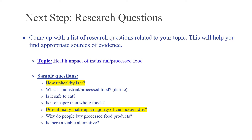Coming up with research questions: let's say my narrowed topic is the health impact of industrial or processed food. The questions become things like: How unhealthy is it? What is industrial or processed food — define it. Is it safe to eat? Is it cheaper? Does it really make up a majority of the modern diet? Why do people buy it? Is there an alternative? You can start with who, what, when, where, why, and how to get started. Coming up with a list like this helps you determine your approach to your actual research.